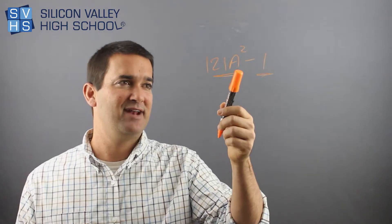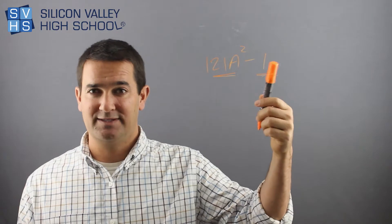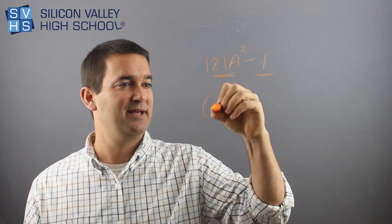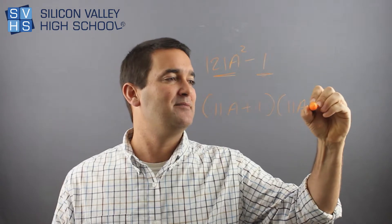This is actually 11a squared. And this would be one times one is one. So really this would be 11a plus one, 11a minus one.